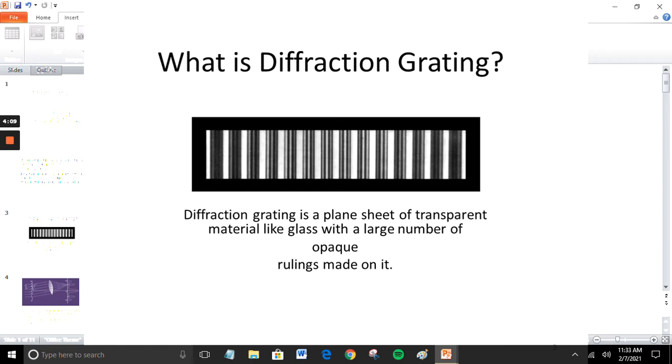The transparent spaces and rulings are equally spaced. Thus, diffraction due to a plain transmission grating is equivalent to a large number of equidistant slits of equal width. The space between the rulings acts as a slit.